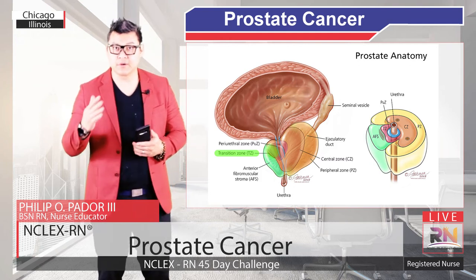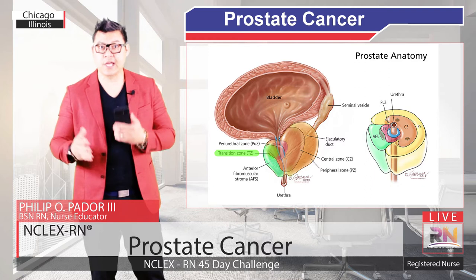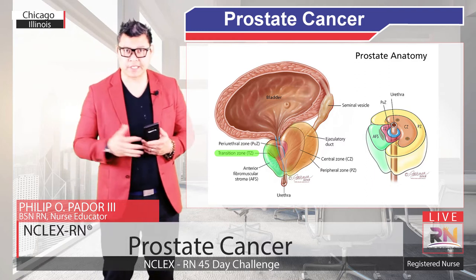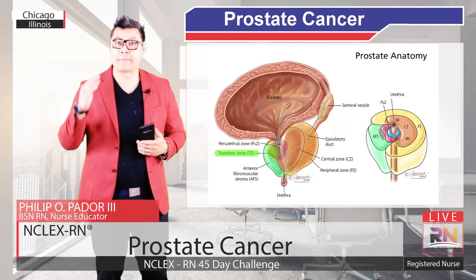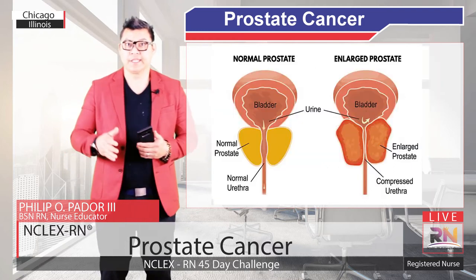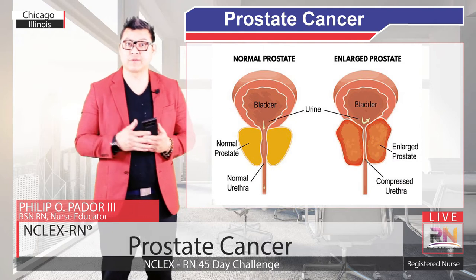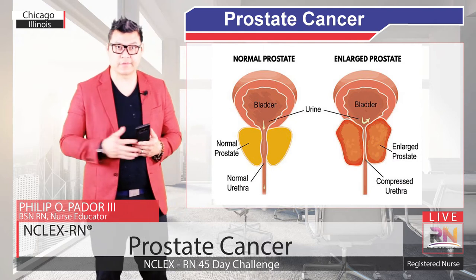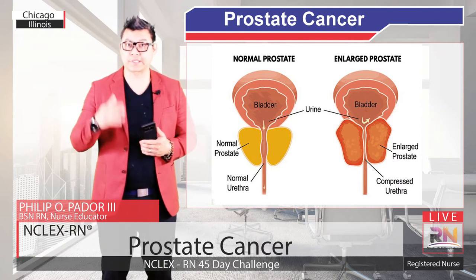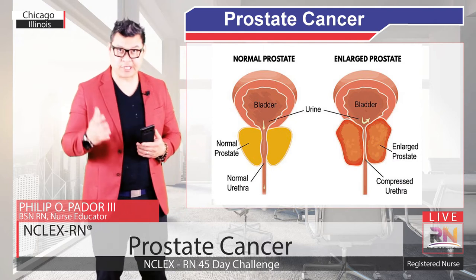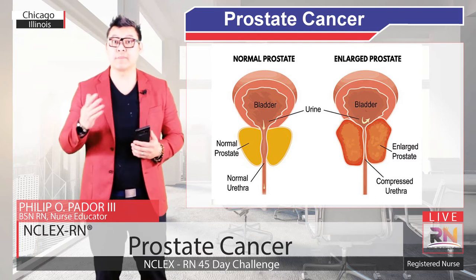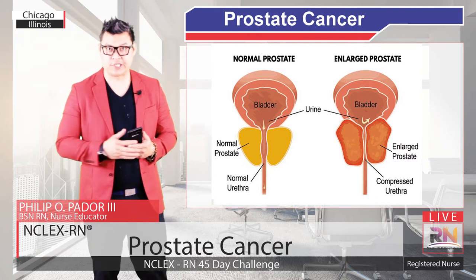The transitional zone undergoes hyperplasia, or an increase in the number of cells, in a large percentage of older men. That often leads to compression of the urethra. This is called benign prostatic hyperplasia and is often considered a normal part of aging.